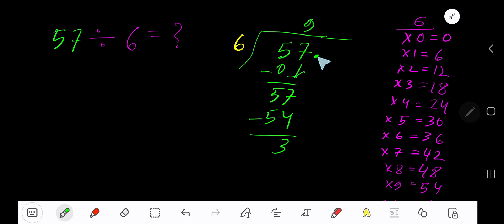then take a decimal, add number of zeros, bring down the first zero. Before you do that, the decimal must come to the quotient directly. 6 goes into 30 how many times? 5 times. 5 times 6 is 30. Subtract, 0. So our answer is 9.5.